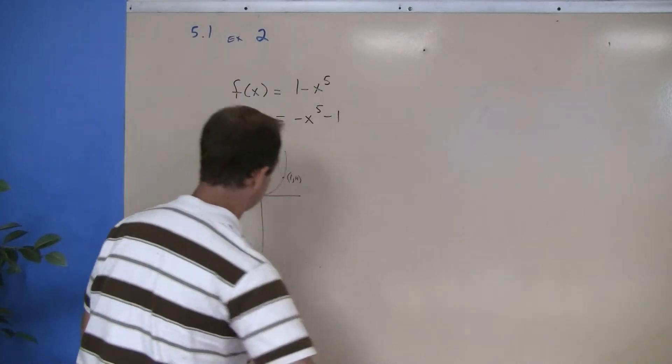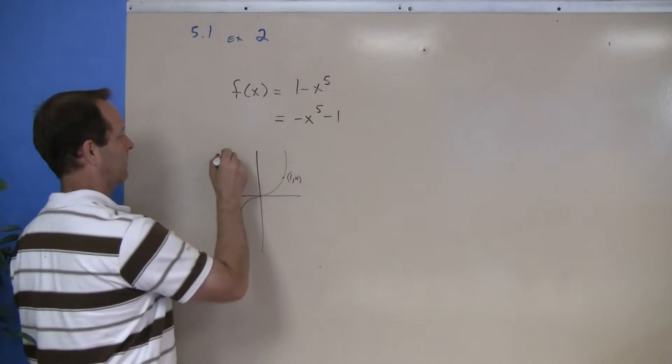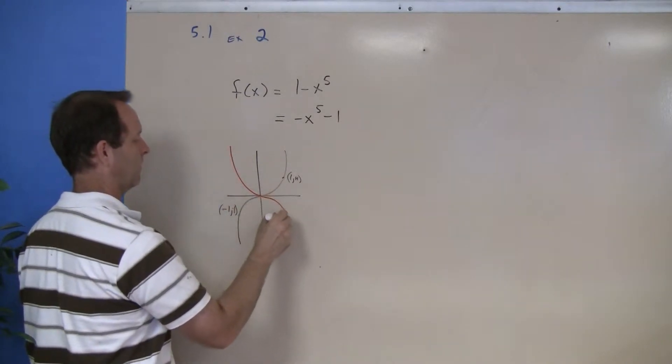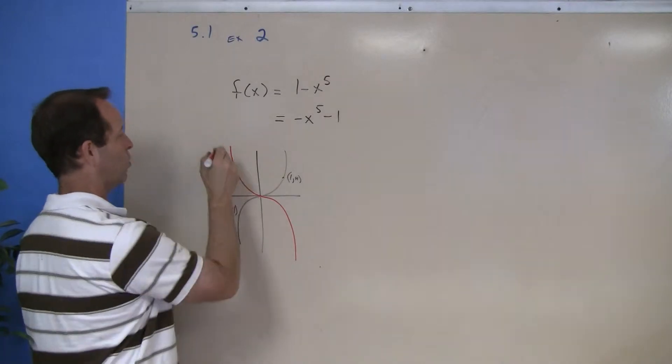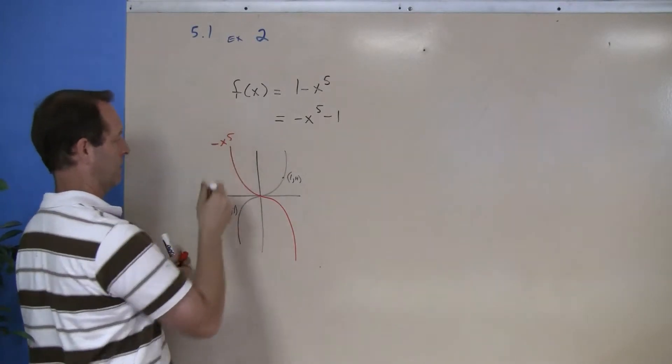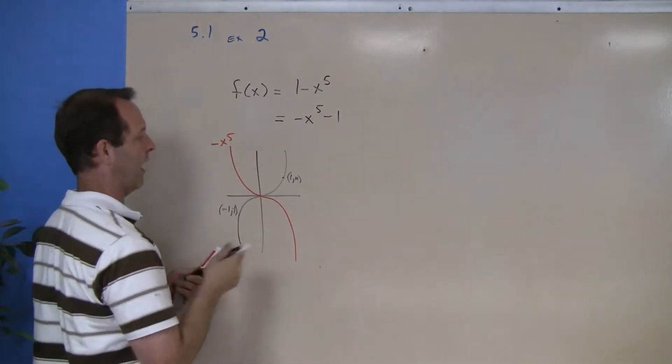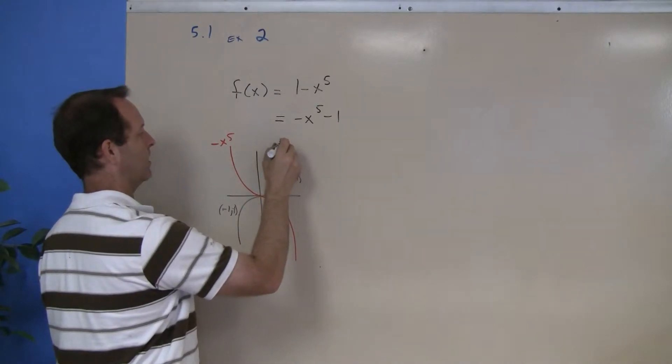So let's use another color. So there's a mirrored version of that, and so this one is negative x to the fifth, where this graph over here was x to the fifth.